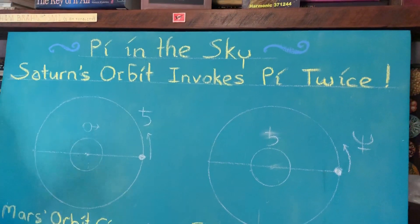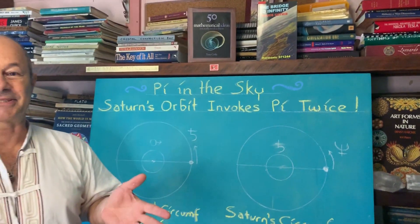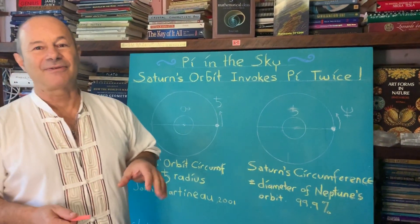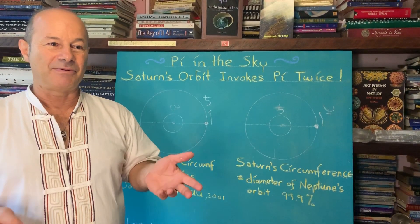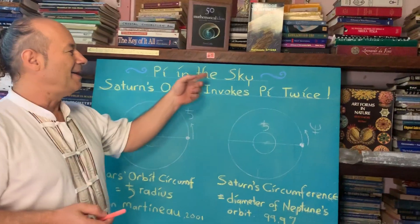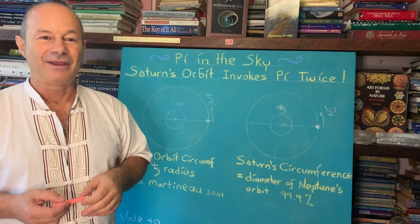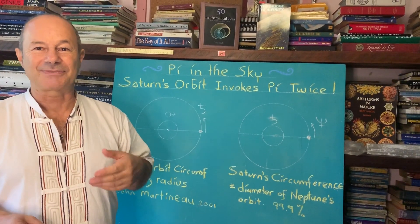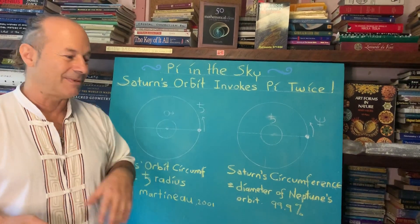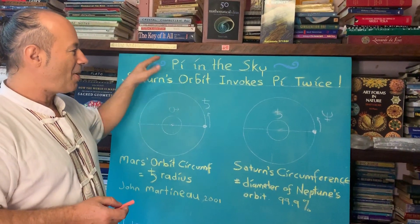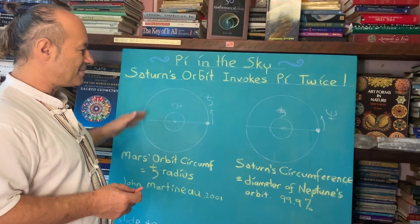There exists a really amazing relationship between the orbiting planets in the sky and the mathematics of the constant that we call Pi. A fancy name being used is called 'Pi in the Sky.' And it's not just Pi — there's actually incredible information about Phi, 1.618. The orbit of Venus in relation to the Earth is a Phi relationship. But this little lecture here is about where does Pi exist in the circumference orbits of the planets.